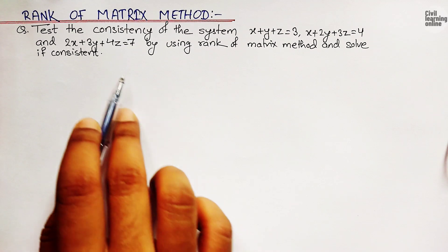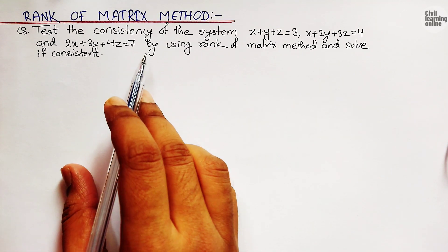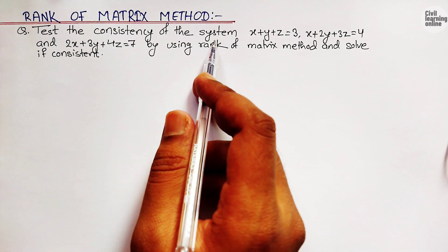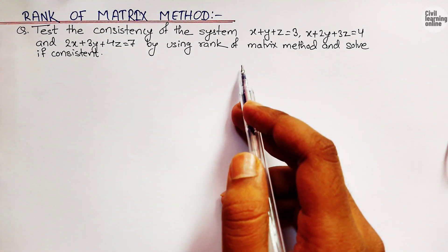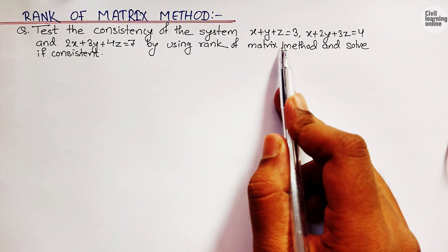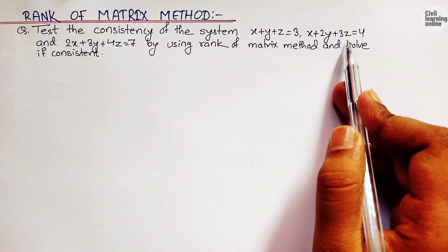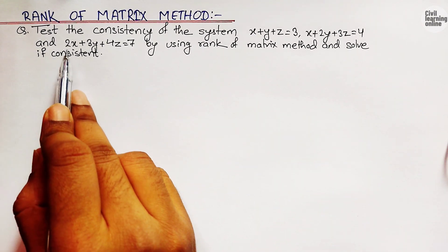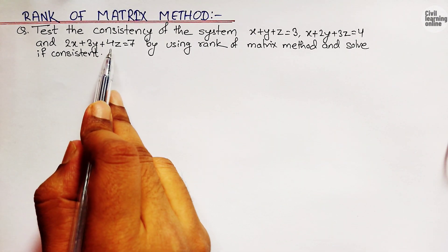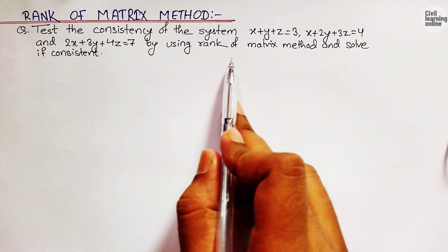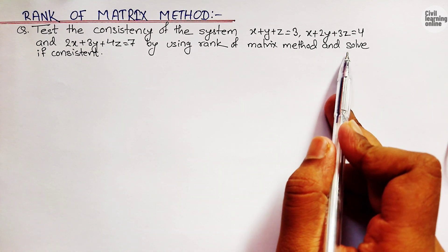Let's begin the solution of this problem. We are asked to test the consistency of the system. The three equations are: x plus y plus z equals 3, x plus 2y plus 3z equals 4, and 2x plus 3y plus 4z equals 7, using the rank of matrix method — and solve if consistent.